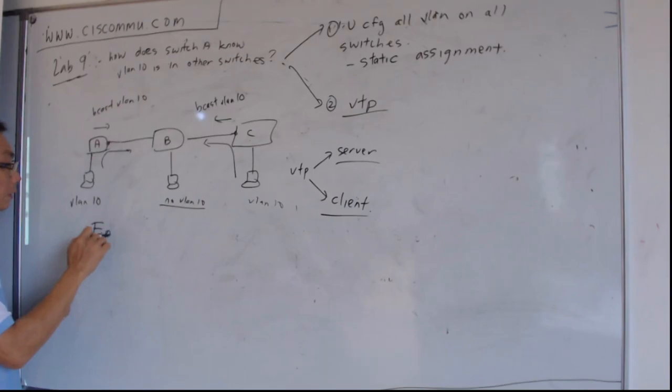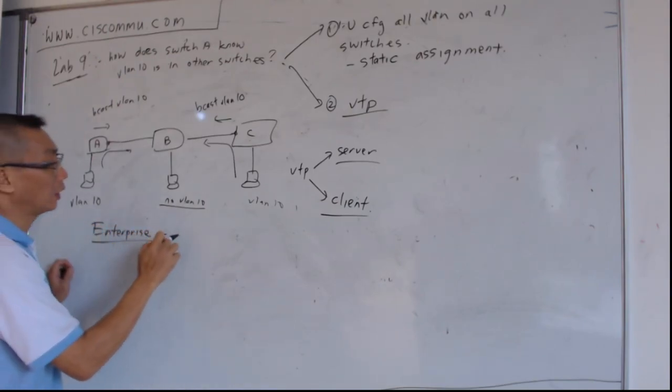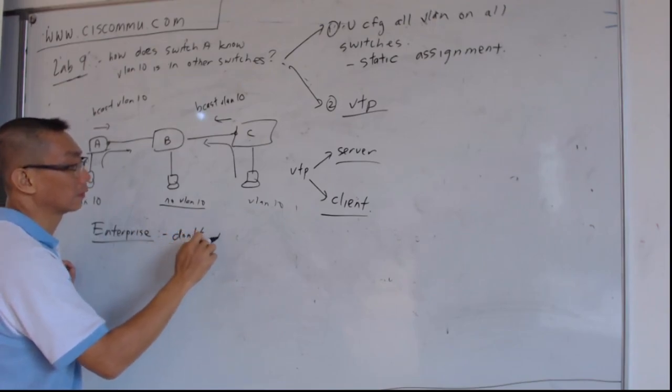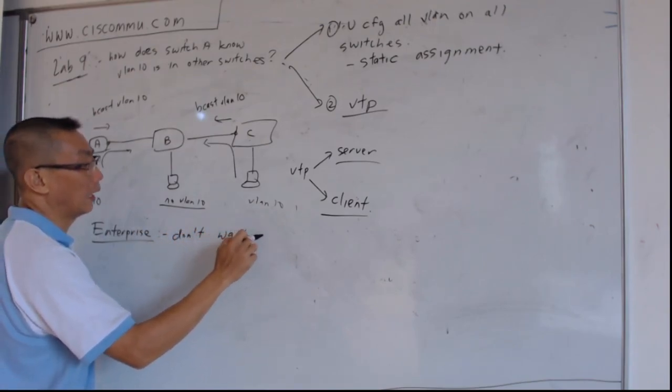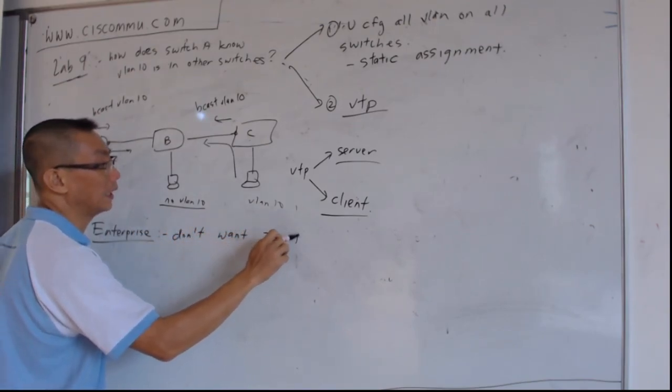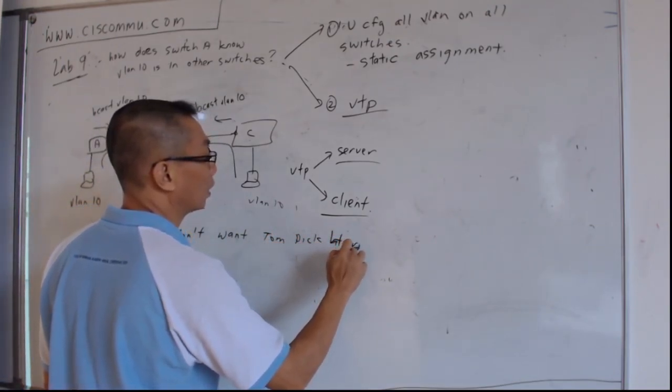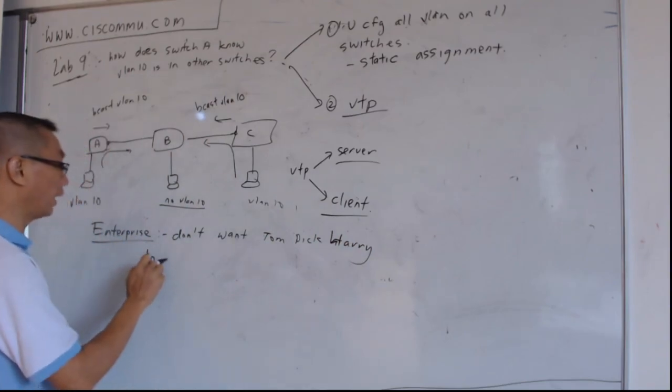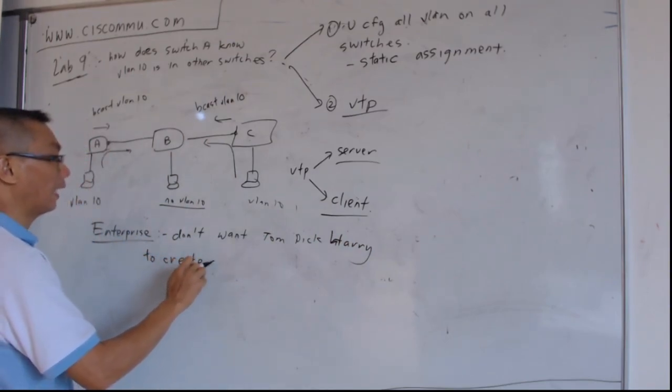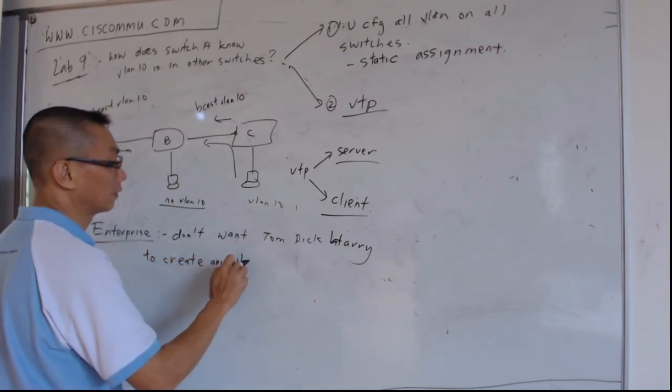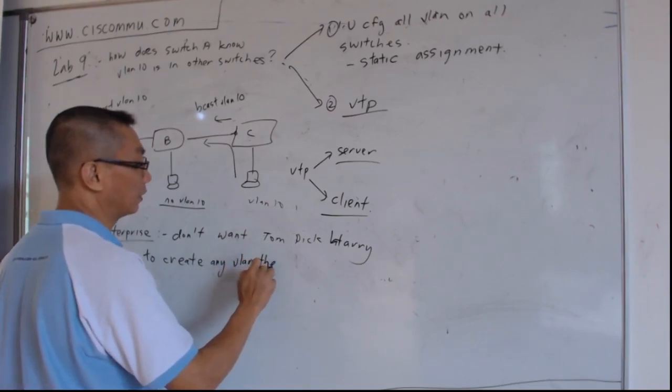Okay? So on the enterprise network, you don't want Tom, Dave, and Harry to create any VLAN they want. You don't want anybody, Tom, Dave, and Harry come into the network and create any VLAN they want.